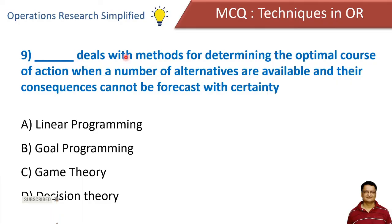Blank deals with methods for determining the optimum course of action when a number of alternatives are available and their consequences cannot be forecasted with certainty. Options: linear programming, goal programming, game theory, and decision theory. Correct answer is decision theory.